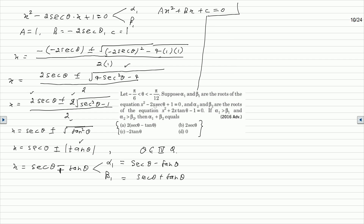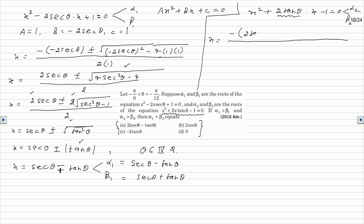Now solving the second quadratic equation: x squared plus 2·tanθ times x minus 1 equals 0, where the roots are alpha 2 and beta 2. Applying the quadratic formula: x equals minus b, where b is 2·tanθ, so x equals minus 2·tanθ plus or minus square root of (2·tanθ)² minus 4 times 1 times (minus 1), divided by 2 into 1.